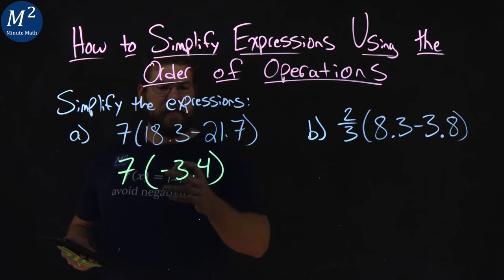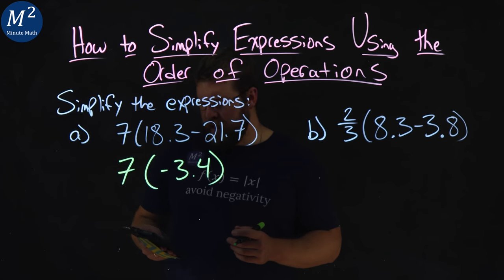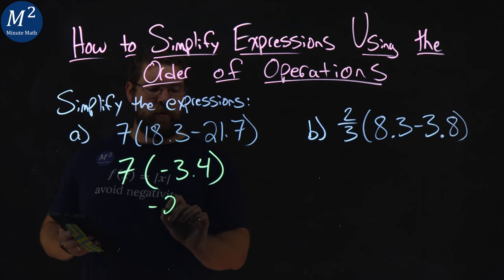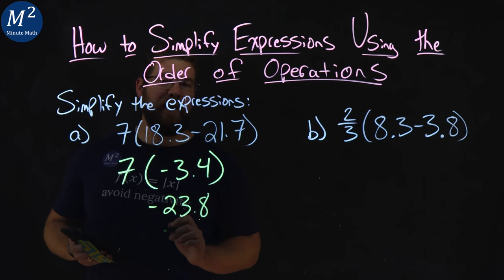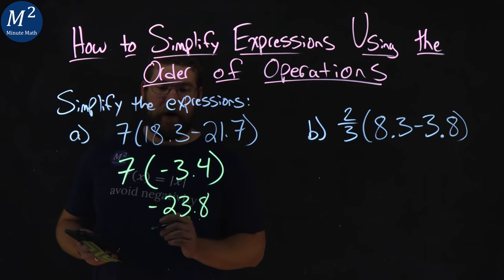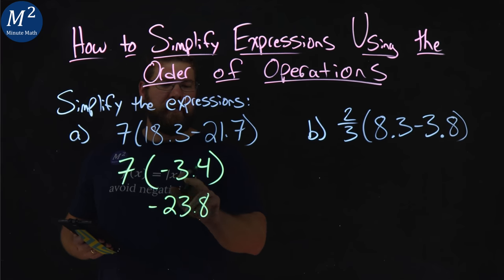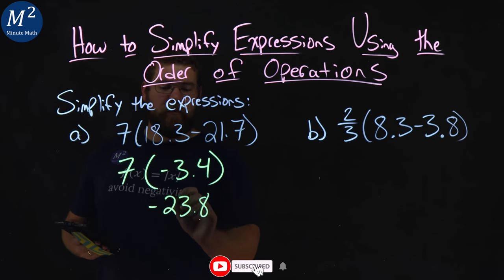From there, we need to multiply. 7 times negative 3.4 is negative 23.8. And again, we have a video on multiplying decimals as well.